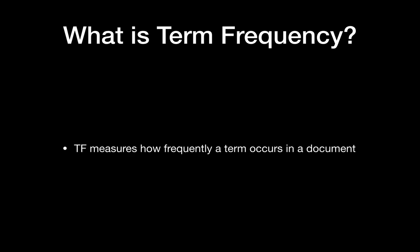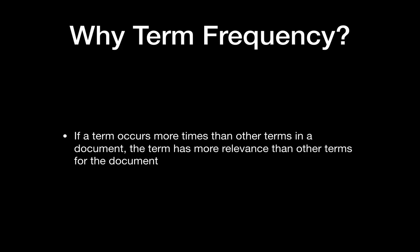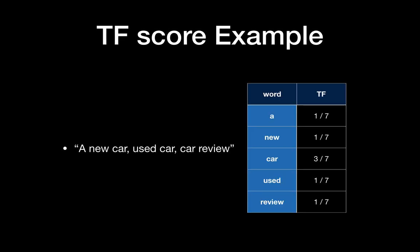Term Frequency (TF) measures how frequently a term occurs in a document. If a term occurs more times than other terms in a document, the term has more relevance than other terms for that document.